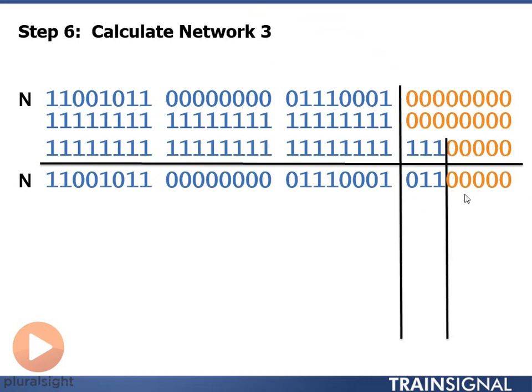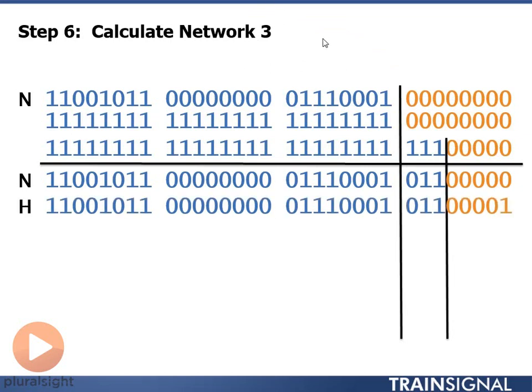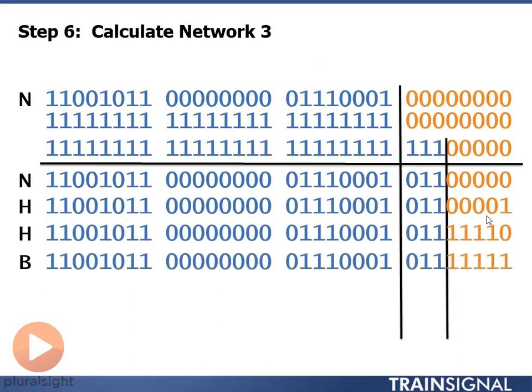I put all 0's in the host portion. That gives me my network address for network number 3. I add 1 to it to get my first host. Calculate my broadcast address by putting all 1's in the host portion. Subtract 1 from the broadcast address to get my last host.